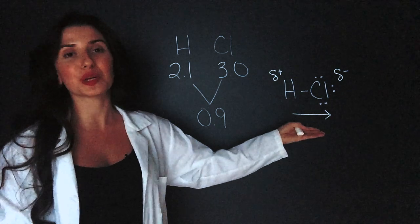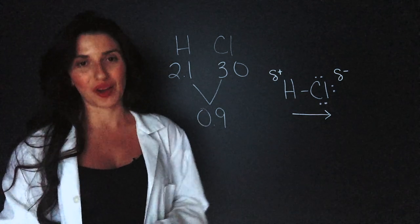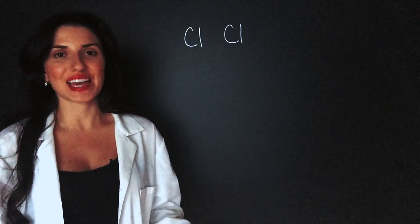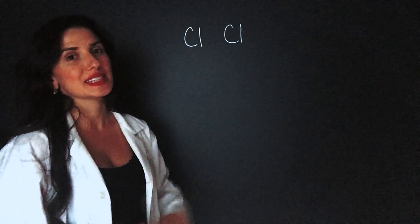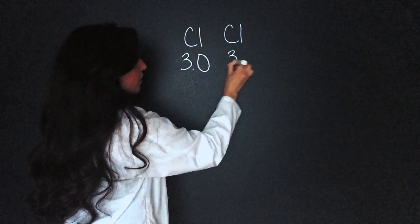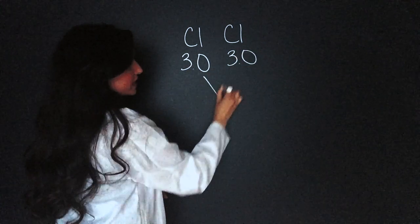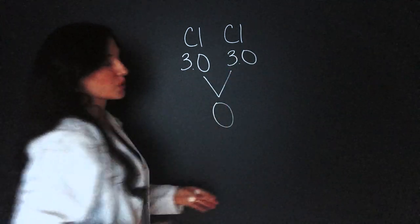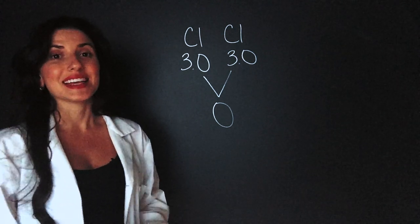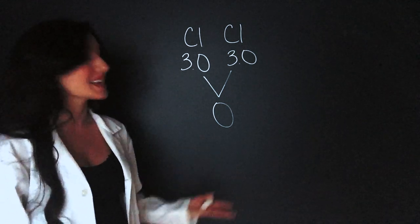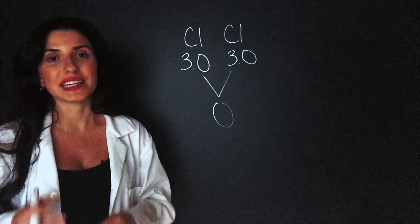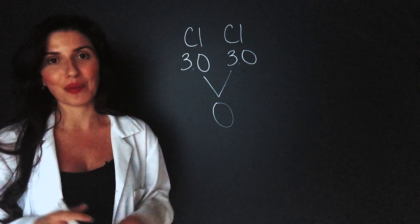This is a polar bond experiencing a dipole moment on the chlorine. Next, I'm going to do chlorine gas, Cl2 — two chlorines bonded together. Each has an electronegativity of 3.0, so the difference between these numbers is 0. We have a covalent bond since it's less than 1.9, and it's non-polar because it's less than 0.5. Non-polar means that the electrons are being shared equally and there is no dipole moment in the molecule.